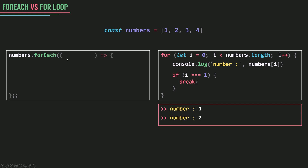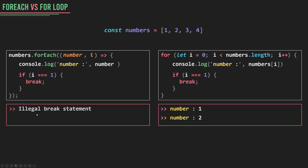Now if I use a forEach, I want to pass in a function, and that function takes as parameters the current element (the number) and the index. I'm going to do the same thing — console log the number — and then use an if statement to check when i equals one, then break. When I run this code I get a syntax error that says 'illegal break statement'. It's illegal to use a break statement inside a function. You can only use break inside a for loop, a for-of loop, a while loop, or a switch statement.